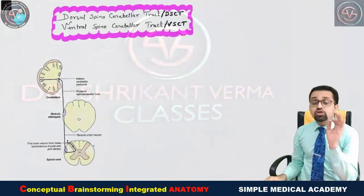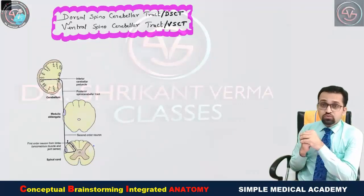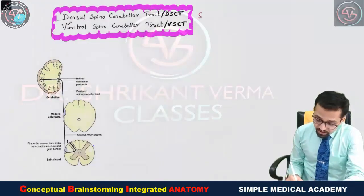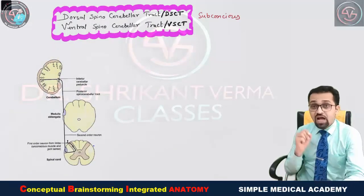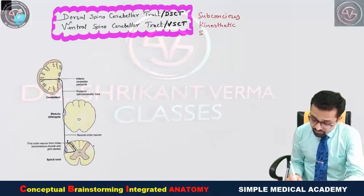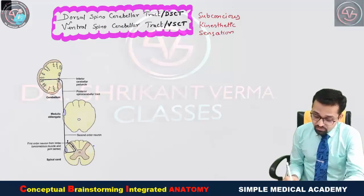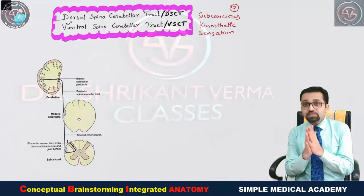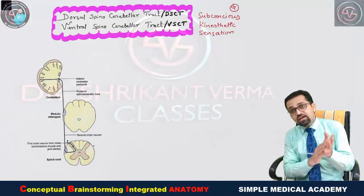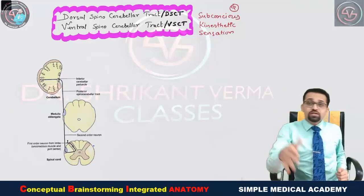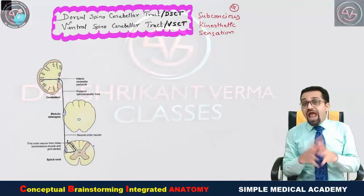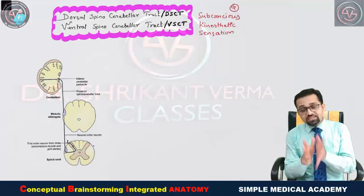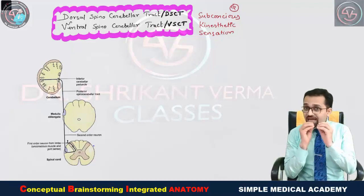Now we look at the dorsal and ventral spinocerebellar tracts. These are responsible for carrying subconscious (unconscious) kinesthetic sensations. When we walk, our limbs move automatically and our body adapts postures at the unconscious level — this is unconscious kinesthetic sensation. These are examples of lateral white column tracts that run from the spinal cord to the cerebellum.